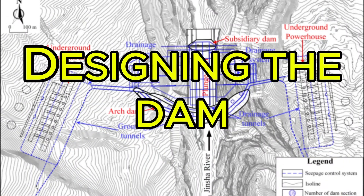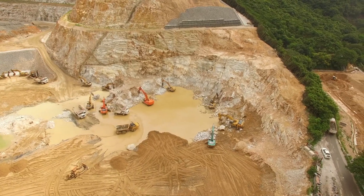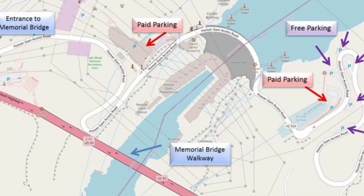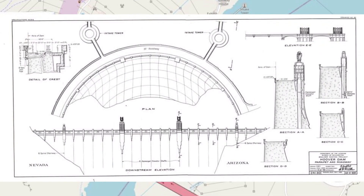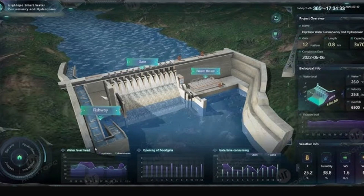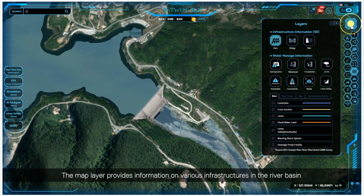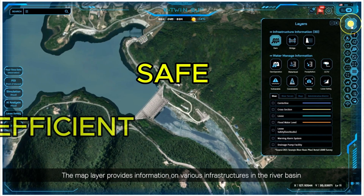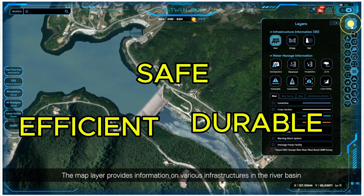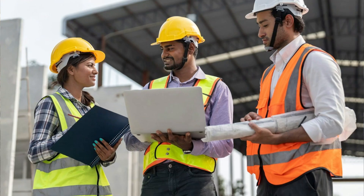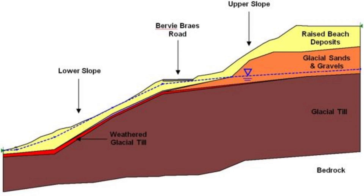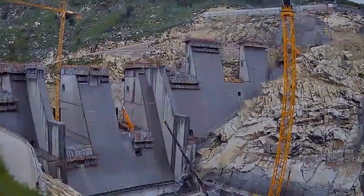Step 2: Designing the dam. Once the site is selected, the design phase begins. Engineers create detailed blueprints and construction plans for the project. They will also use advanced computer models to simulate the dam's performance under various conditions, ensuring the structure will be safe, efficient, and durable throughout its lifespan. During the design phase, the engineers will critically assess and analyze the ground conditions of the site, as the topography and geological conditions of the selected site are major determinants of the type of dam to be constructed.